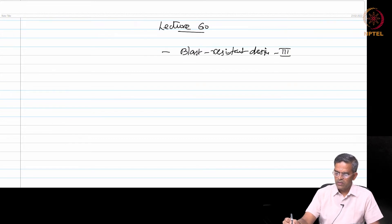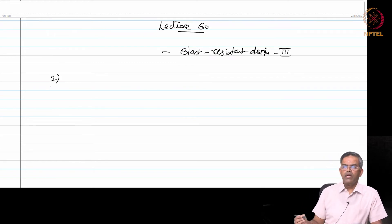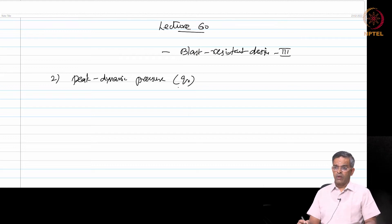I put this as lecture 3 in Blast Resistant Design. We are talking about another parameter which is peak dynamic pressure given as Q naught. This is essentially caused due to the air movement around the building.